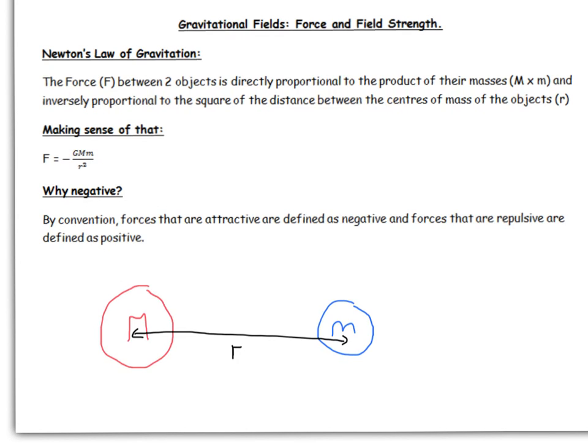So that's a long and complicated way of saying this: that F, the force, is equal to minus GMm over r squared.